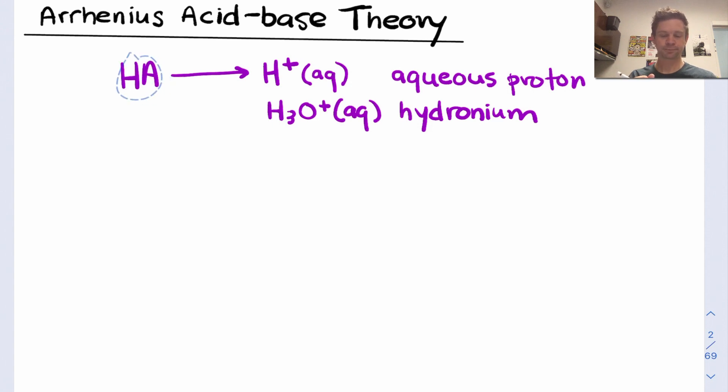Typically, HA will contain a hydrogen in its formula, that is the hydrogen that is given up or donated to increase the concentration of dissolved H+ in solution.